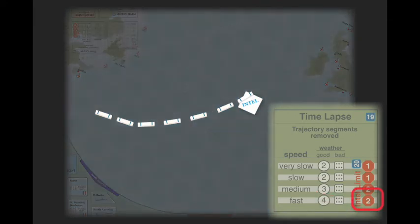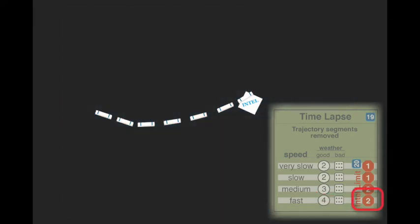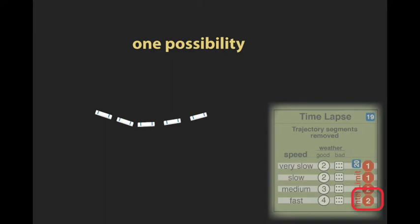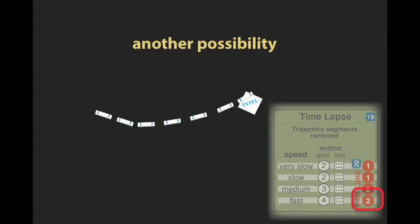Intel limit imposes a limit on the number of segments that may be removed by time-lapse. When invoked, exactly one segment with an intel attachment must be removed. Medium and fast task forces, however, may also remove a second trajectory segment, but only one of the segments may have an intel marker attached.